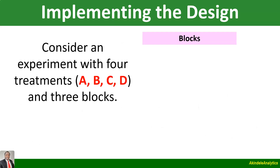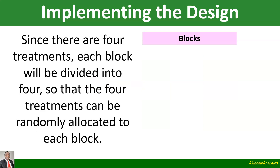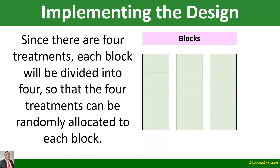How do we implement the design? Let's give an example. Consider an experiment with four treatments, A, B, C, and D, and three blocks. So we have partitioned the experimental units into three to give us three blocks. Here are the three blocks: block one, block two, block three. Since there are four treatments, each block will be divided into four so that the four treatments can be randomly allocated to each block. You can see here, each block has been divided into four.